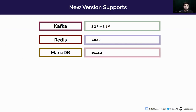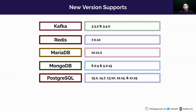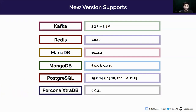We are providing support for MariaDB 10.11.2. One of the important version supports in this release is MongoDB 6 — we have added support for MongoDB versions 6.0.5 and 5.0.15. We have added several version supports for Postgres: 15.2, 14.7, 13.10, 12.14, and 11.19. Finally, we have added version support for Percona XtraDB 8.0.31.